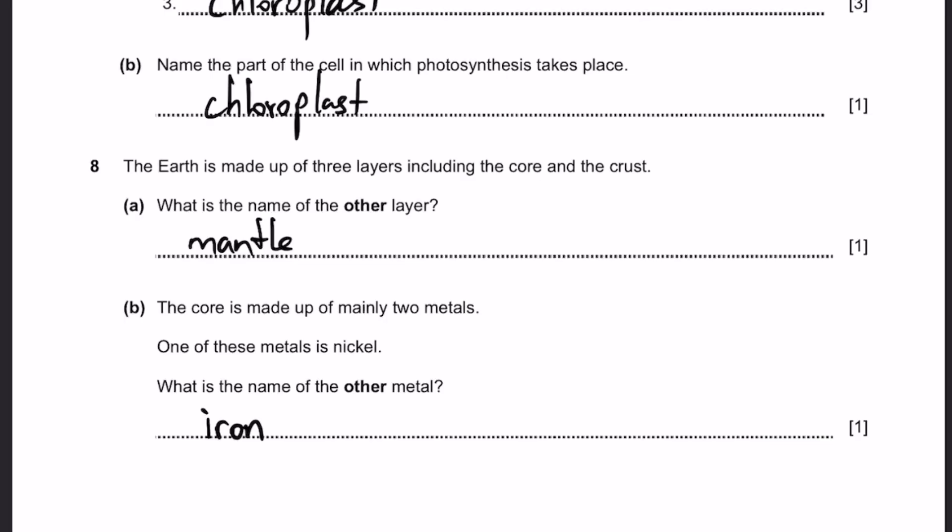Question 8. The earth is made up of three layers, including the core and the crust. Part A. What's the name of the other layer? It is the mantle. Part B. The core is made of mainly two metals. One is nickel. What is the name of the other? That is iron.